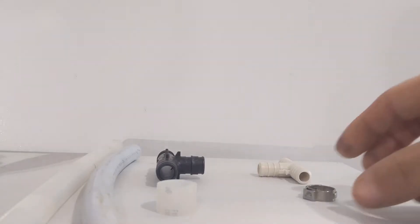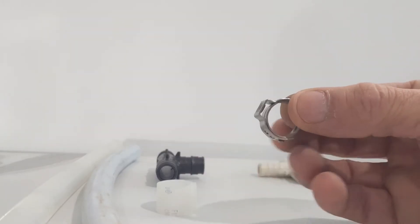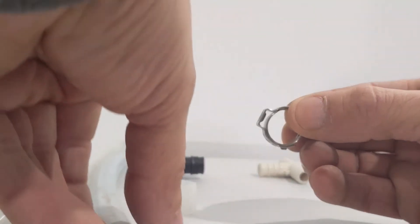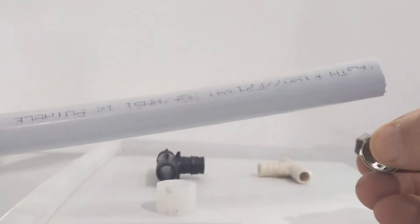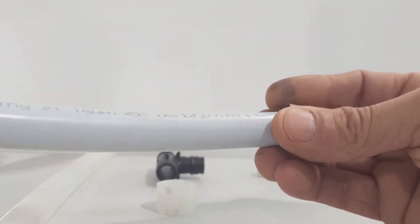So now let's take a look at how these two systems connect to the fitting from the pipe. The PEX-B uses a crimp style, which just slides over the pipe first. Make sure you put this on first.